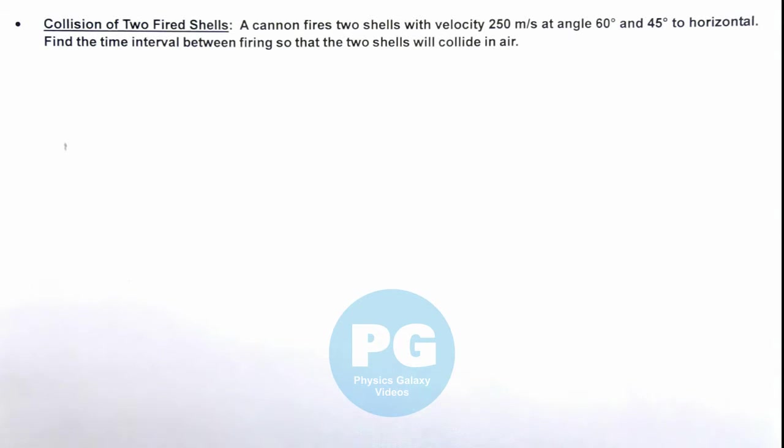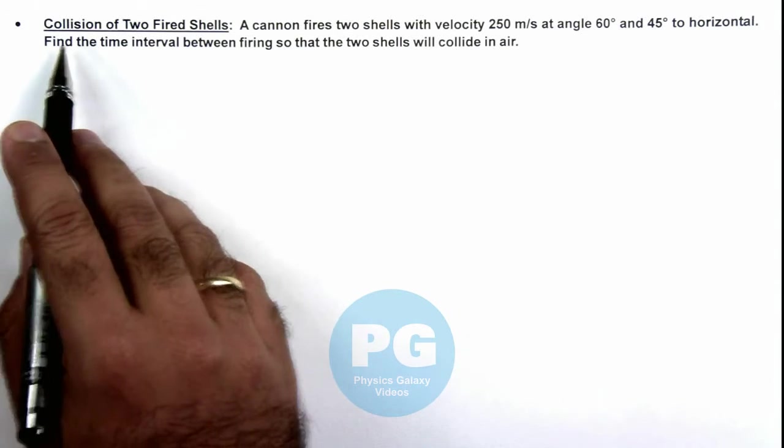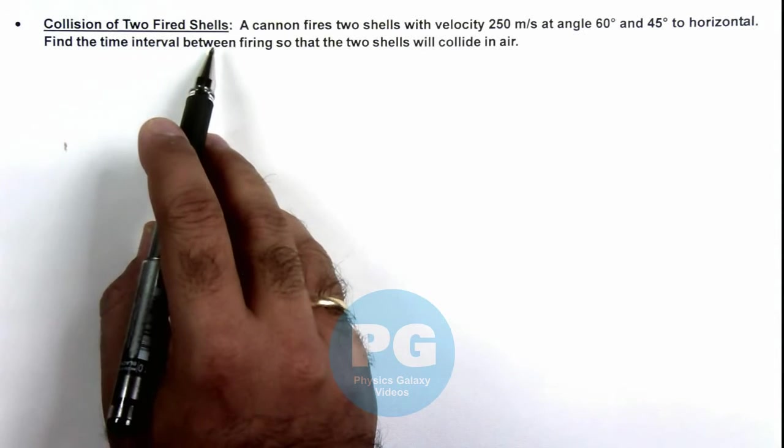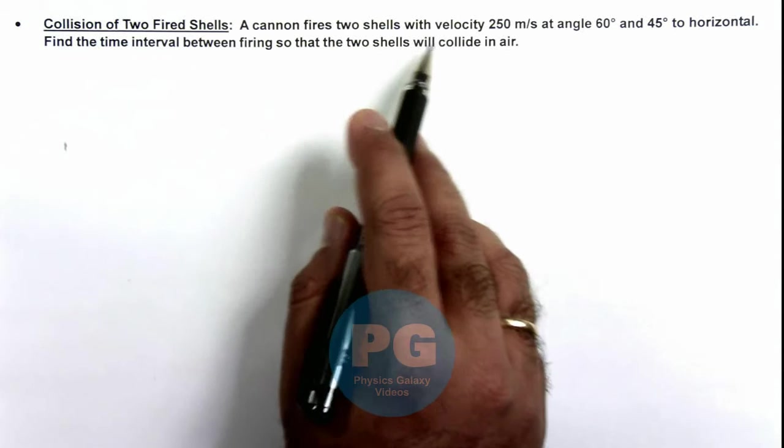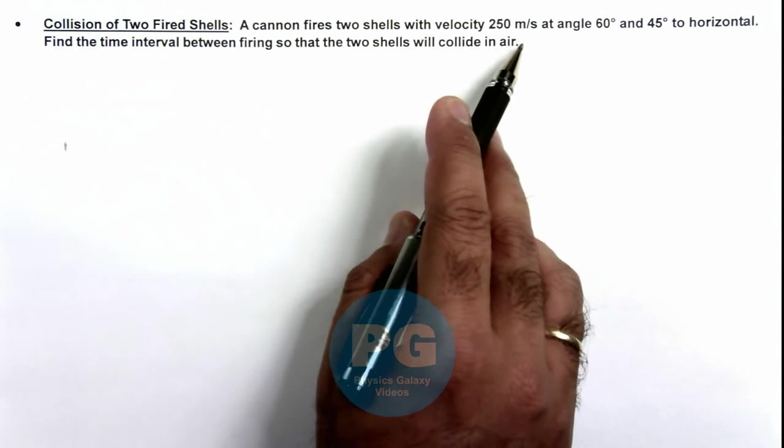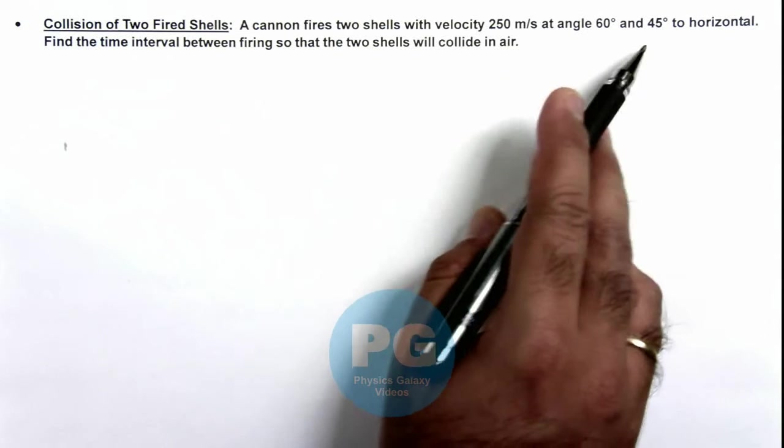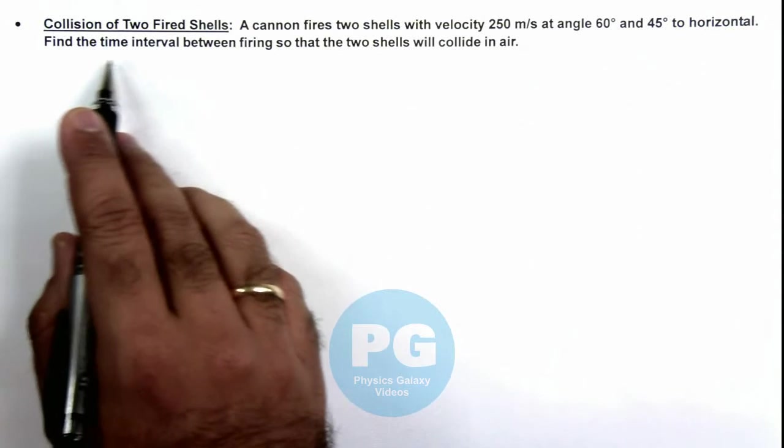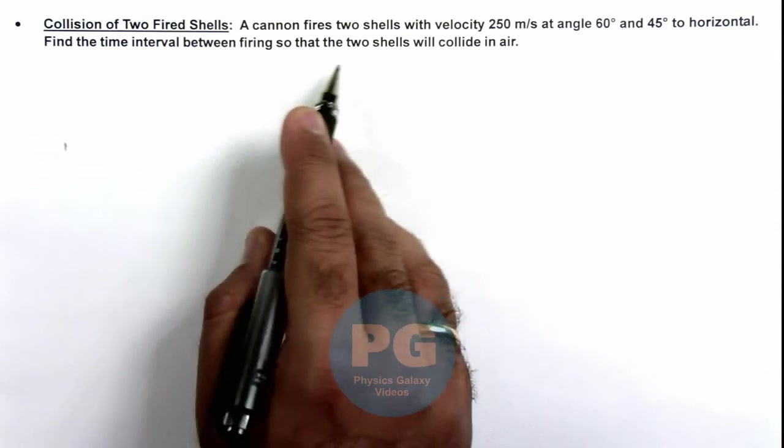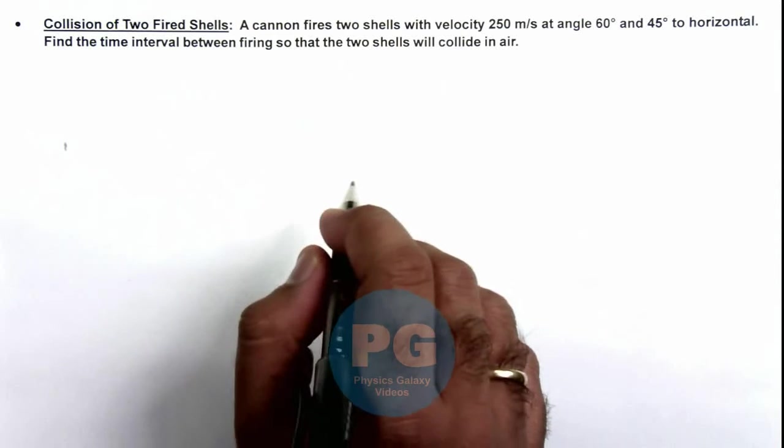In this illustration we'll study the collision of two fired shells. We are given that a cannon fires two shells with velocity 250 meters per second at angles 60 degrees and 45 degrees to horizontal. We are required to find the time interval between firing so that the two shells will collide in mid air.